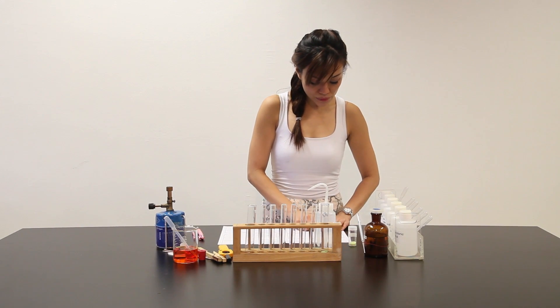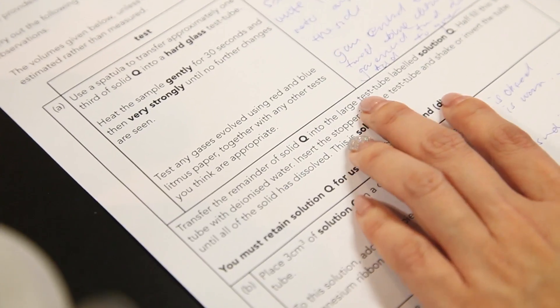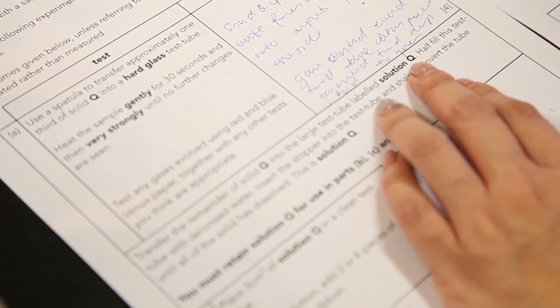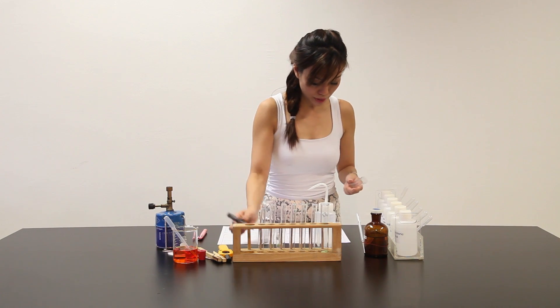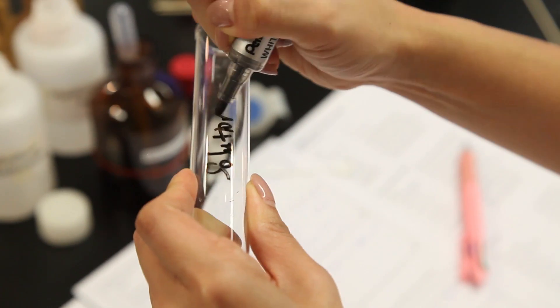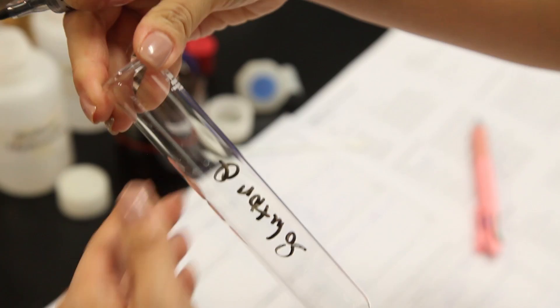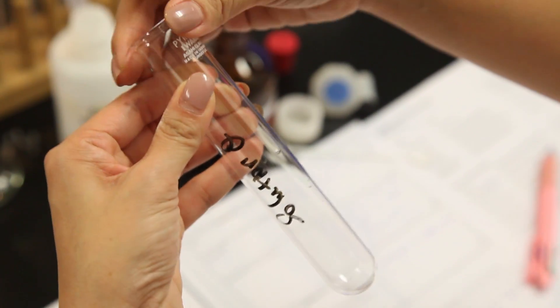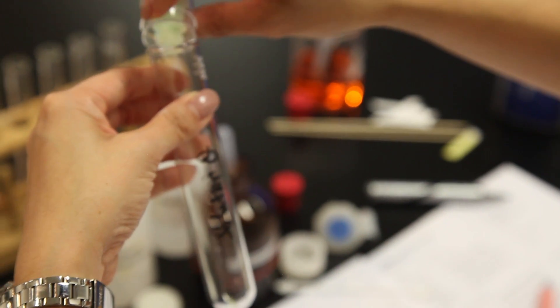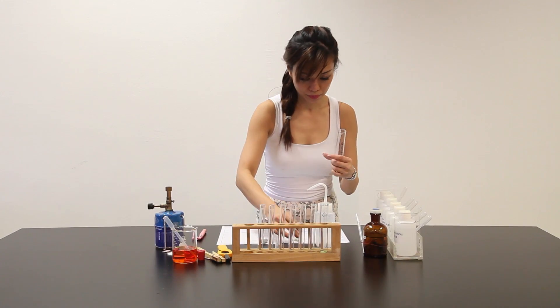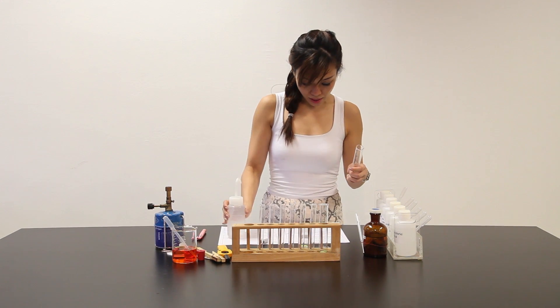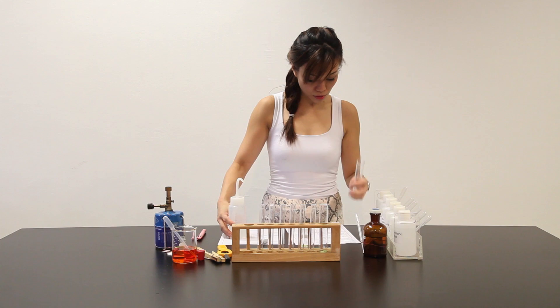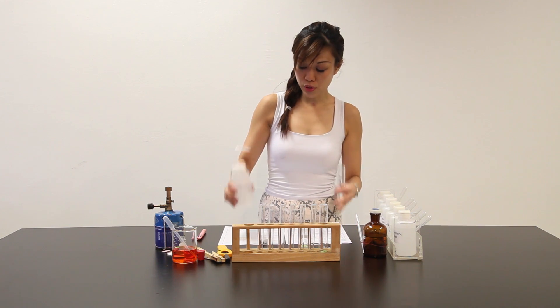And then it goes on to say that transfer the remainder of SORT-Q into a large test tube labeled solution Q. So I have some more of it over here. I'm going to label it as solution Q. Transfer the rest of SORT-Q into this large test tube and I'm supposed to fill this test tube with deionized water which is over here.